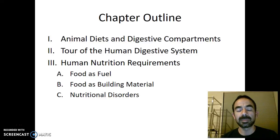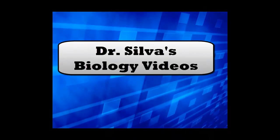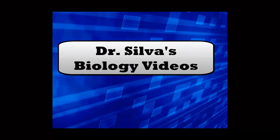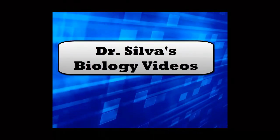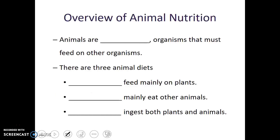In this video, we're going to learn about animal diets and digestive compartments, and then move on with a tour of the human digestive system. We had learned about the four stages of food processing. Now let's talk about the different animal diets.